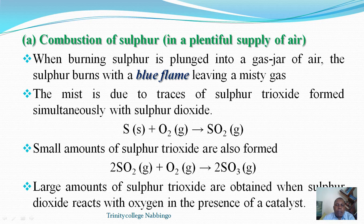The first reaction is the combustion of sulfur — the burning of sulfur in a plentiful supply of air. Sulfur burns in air or excess air with a blue flame, leaving behind a misty gas. The reason is because sulfur reacts with oxygen to produce sulfur dioxide. However, since the oxygen is in excess, some of the sulfur dioxide formed reacts further with oxygen to produce sulfur trioxide.